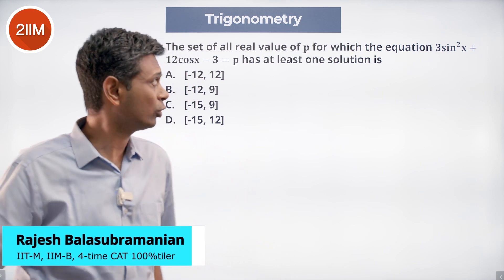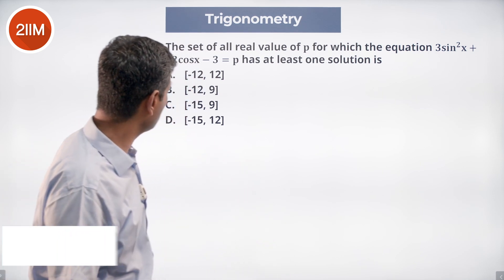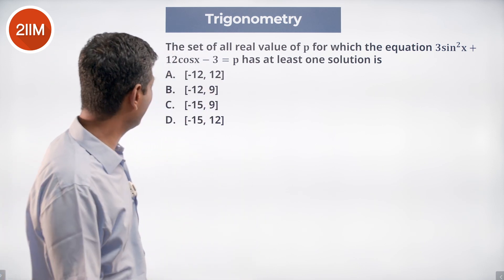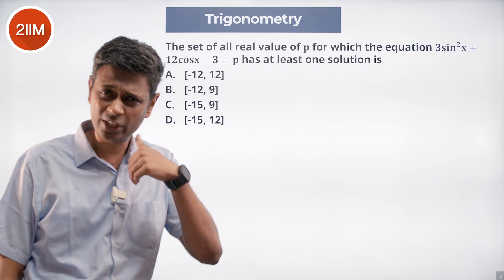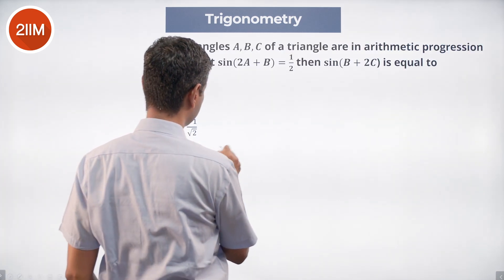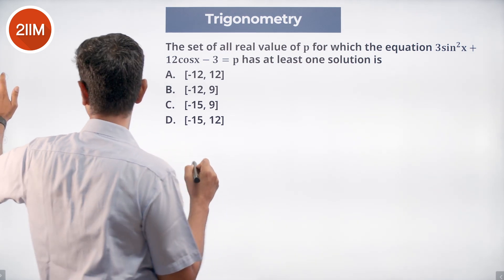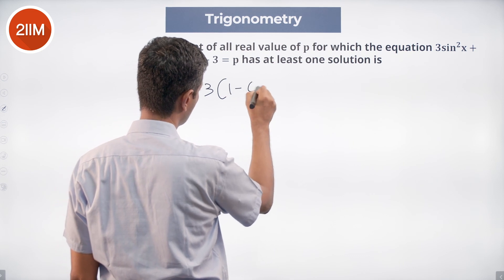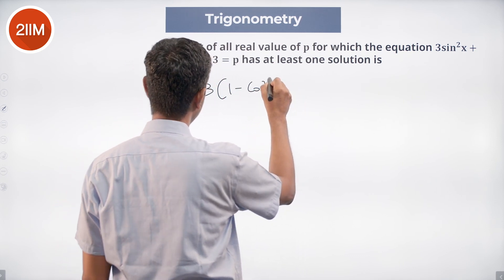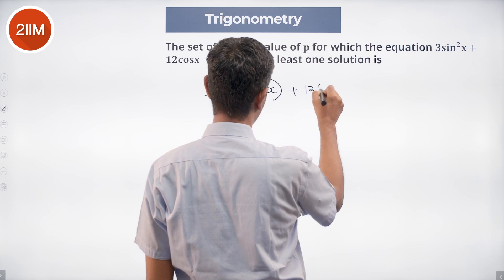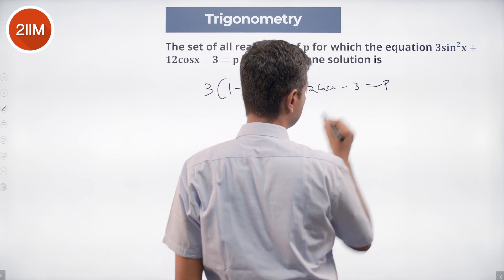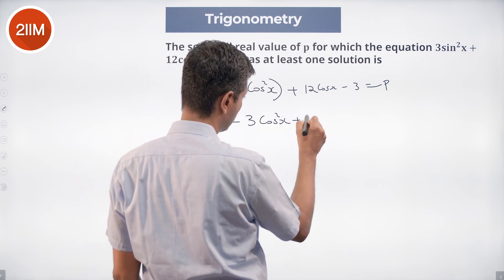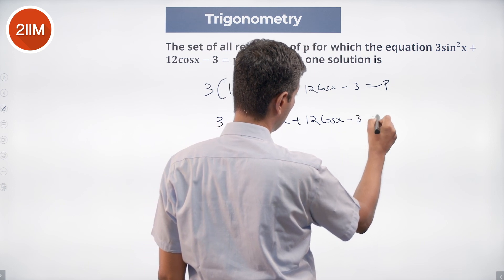Lovely, beautiful, challenging question. We have 3sin²x + 12cosx - 3 = p, and we want this to have at least one solution. Since we have both sin²x and cosx, I don't want to deal with sin²x, so I substitute sin²x = 1 - cos²x. That gives us 3(1 - cos²x) + 12cosx - 3 = p, which expands to 3 - 3cos²x + 12cosx - 3 = p.